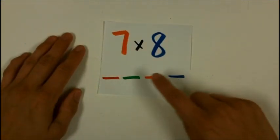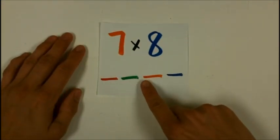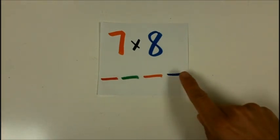Seven times eight. Ready? Go. Five, six, seven, eight. Fifty-six is seven times eight.